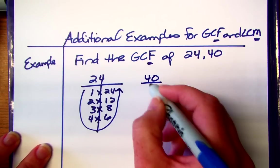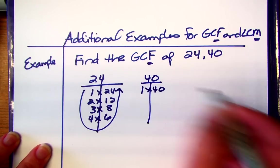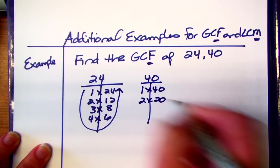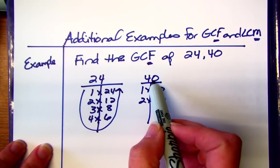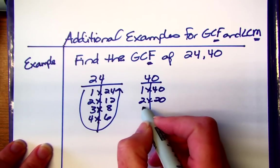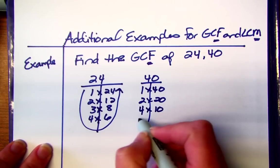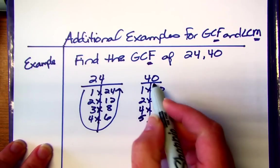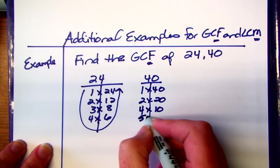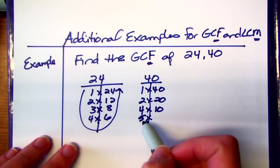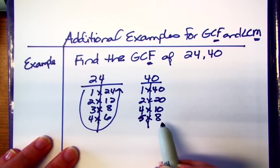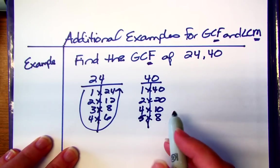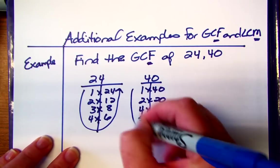And then 40, always put your freebie down because we like our freebies. 2 times 20, 3 doesn't work because remember the trick for 3 is you add your digits. So 4 plus 0 is 4, 4 is not evenly divisible by 3. And then I'm going to do 4, 4 times 10, 5. Now I know 5 works because it ends in a 0. That's our divisibility trick. If it's 0 or 5, you know it's divisible by 5. And then so it's 5 times 8, 7 doesn't work, 8, oh we're already repeating. So we're done.